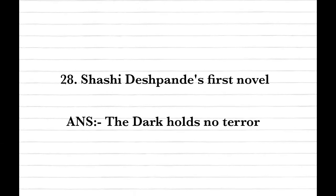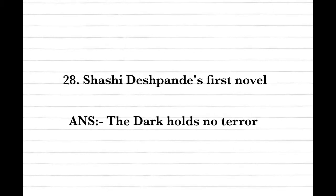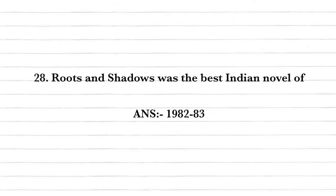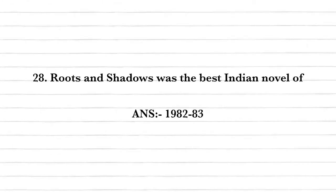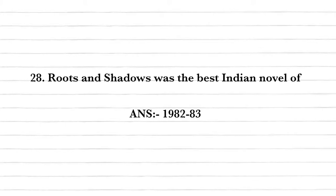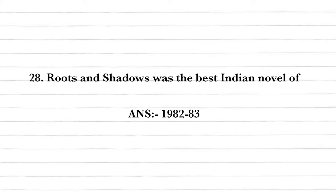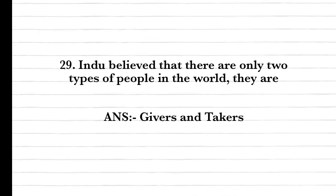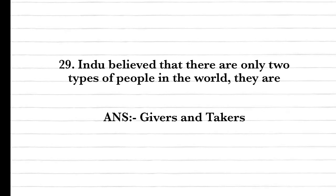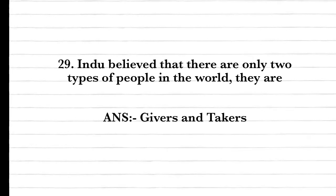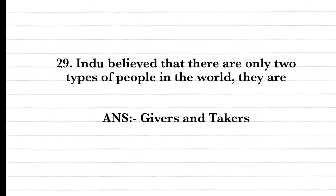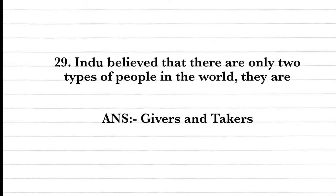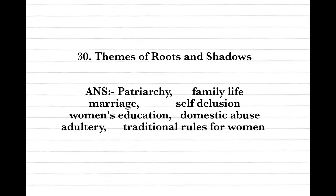Question twenty-seven: Shashi Deshpande's first novel is The Dark Holds No Terrors. Question twenty-eight: Roots and Shadows won the best Indian novel award for 1982–83. Question twenty-nine: Hindu believed there are only two types of people in the world — givers and takers.